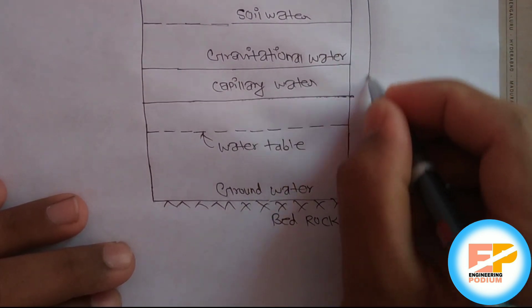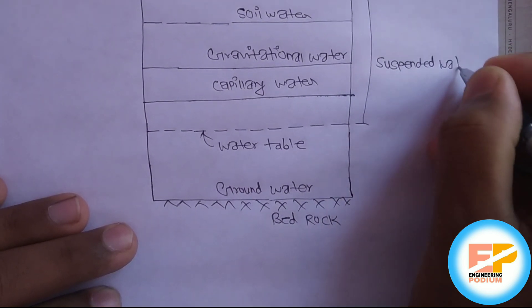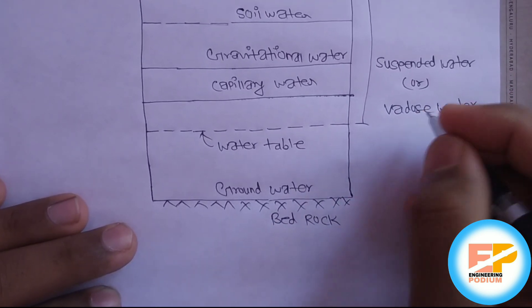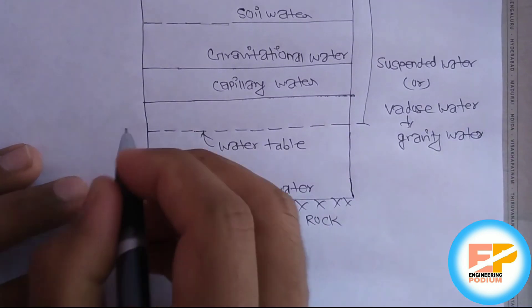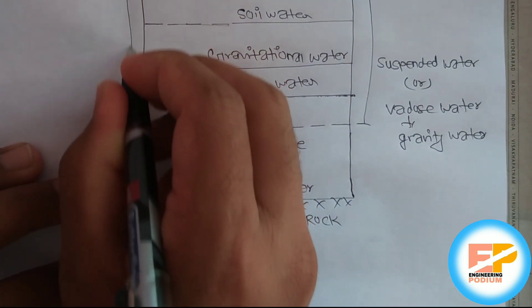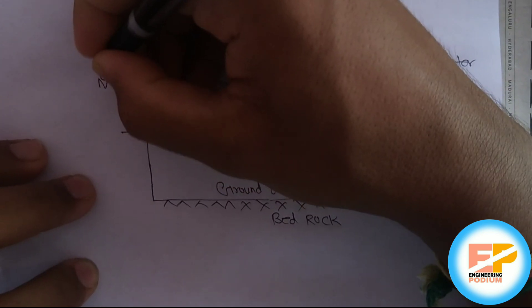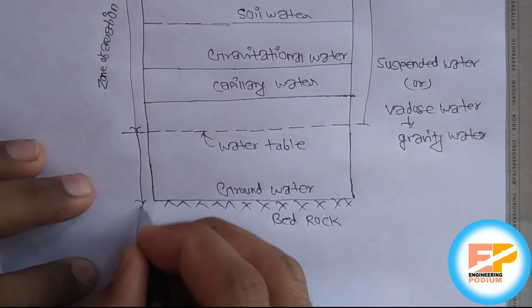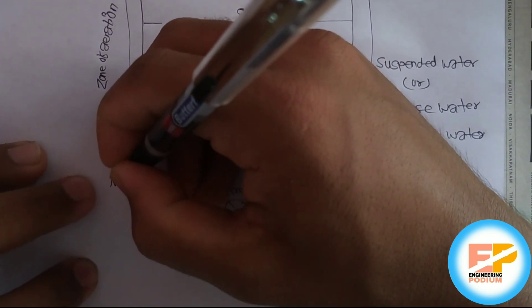Above the water table is called suspended water, or you can say vadose water. Vadose water is also called gravity water. Above the water table it is called zone of aeration, and below the water table is called zone of saturation.